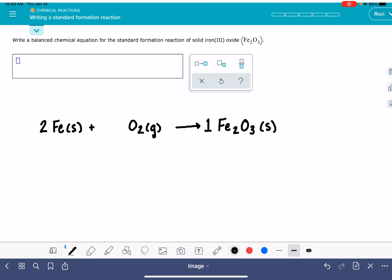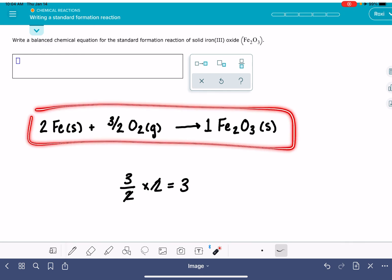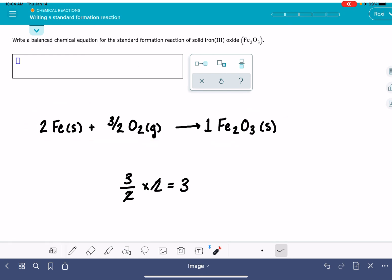We are allowed to use fractions as stoichiometric coefficients in these equations, and that's what we're going to have to do pretty frequently, especially when we're dealing with gases. So 3 halves of an oxygen molecule, each oxygen molecule has 2 oxygen atoms, gives us a total of 3 oxygen atoms, which is exactly what we need. This is the balanced chemical equation for the standard formation of solid iron 3 oxide.